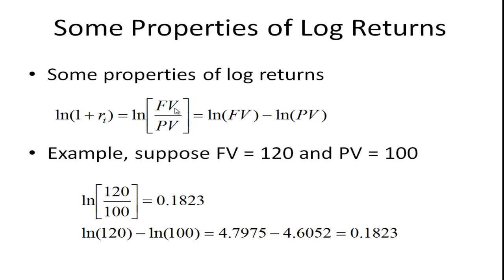So the natural log of future value over present value equals the natural log of the future value minus the natural log of the present value. For example, suppose the future value is 120 and the present value is 100. If we take the natural log of 120 over 100 or the natural log of 1.2 we get 0.1823. If we take the natural log of 120, the numerator, and then we subtract the natural log of 100 which is the denominator, we get 4.7975 minus 4.6052 and we get the same answer, 0.1823.